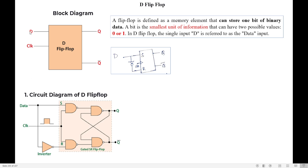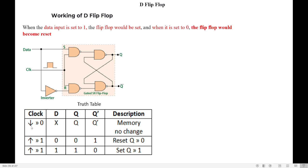There is a single input D, and two outputs Q and Q-bar. Clock is mandatory in a flip-flop — the output changes if there is a change in the clock signal. Now let us see the working of the D flip-flop. One important thing in the D flip-flop one should understand is its input-output relationship.